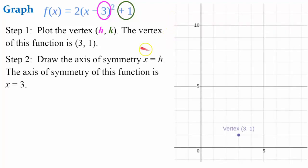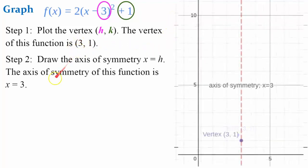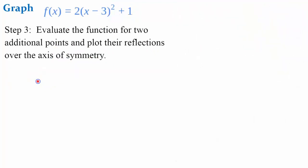Go ahead and draw the axis of symmetry, which passes through the vertex. The vertical line x equals 3. Step three, we're going to evaluate the function for two additional points.